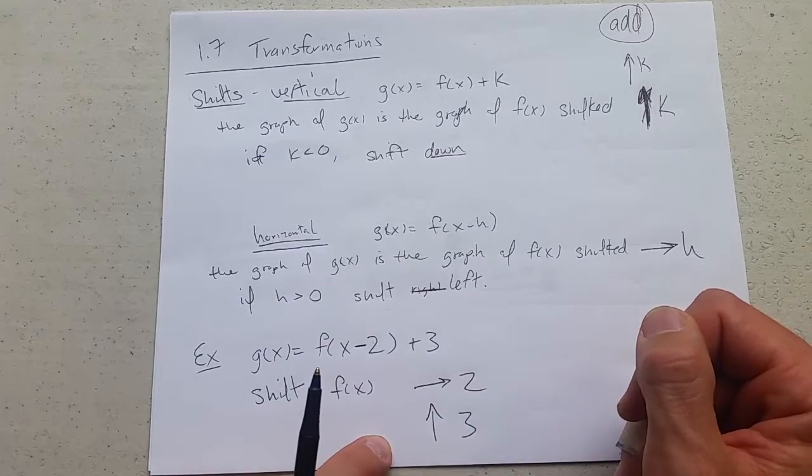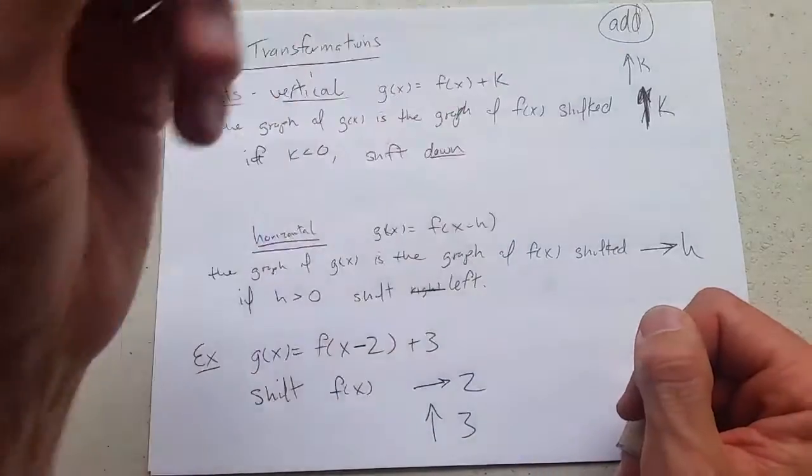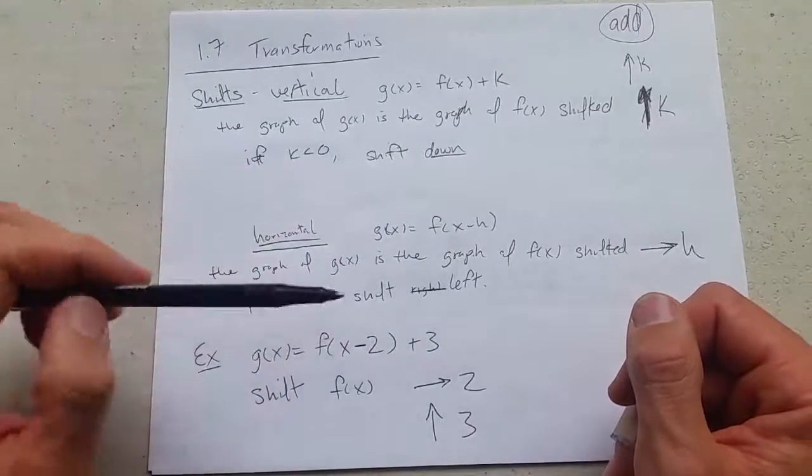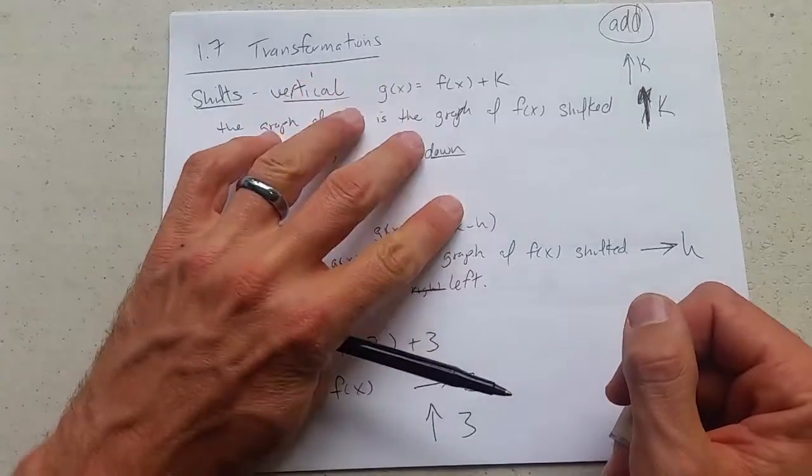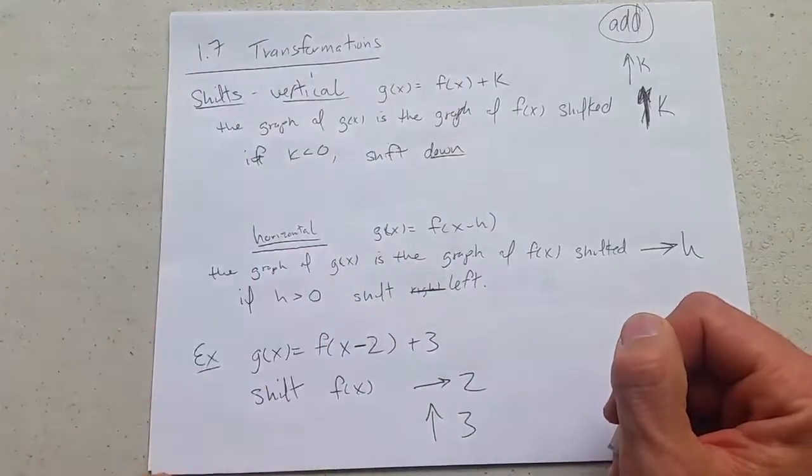Now how do you apply these to a graph? You just use addition. How do you go to the right two? You add two to every x coordinate. How do you go up three? Just take all your points and add three to their y coordinates.